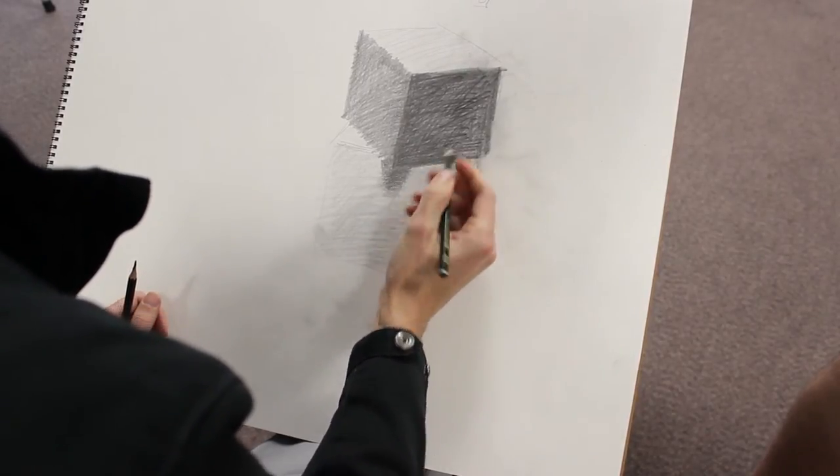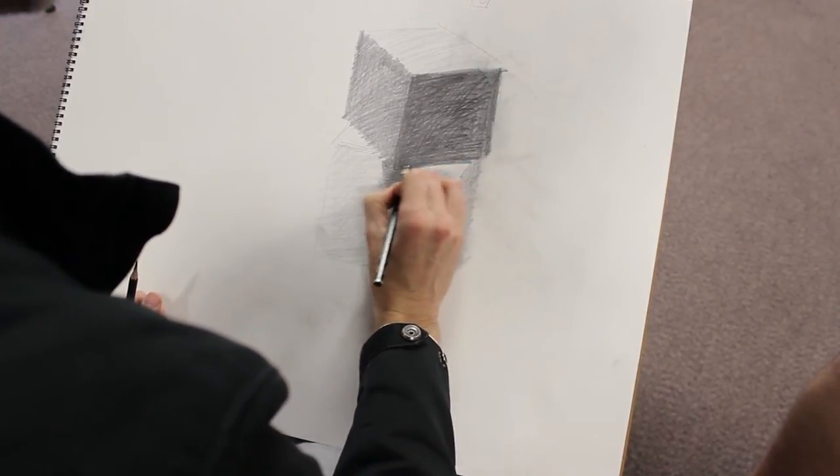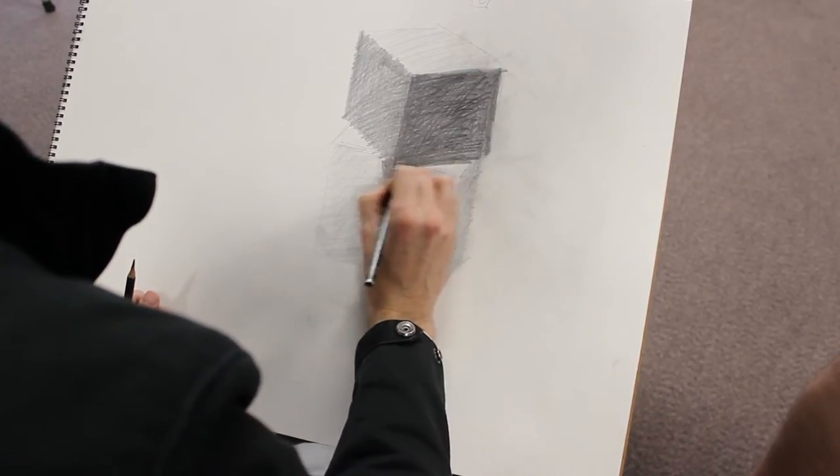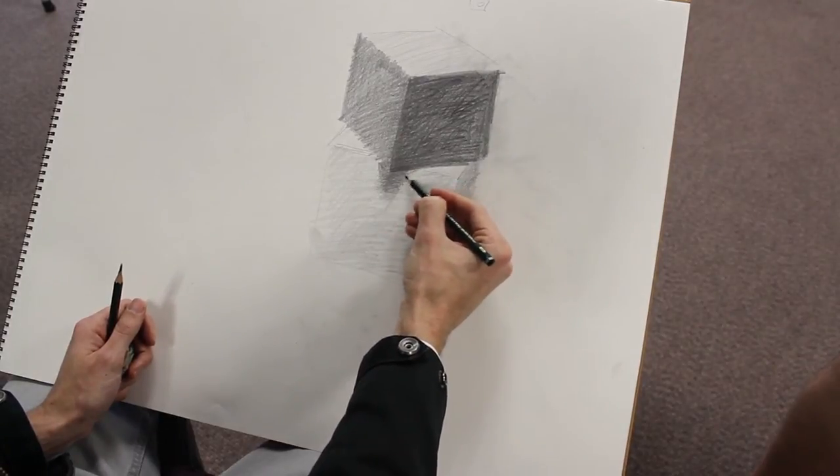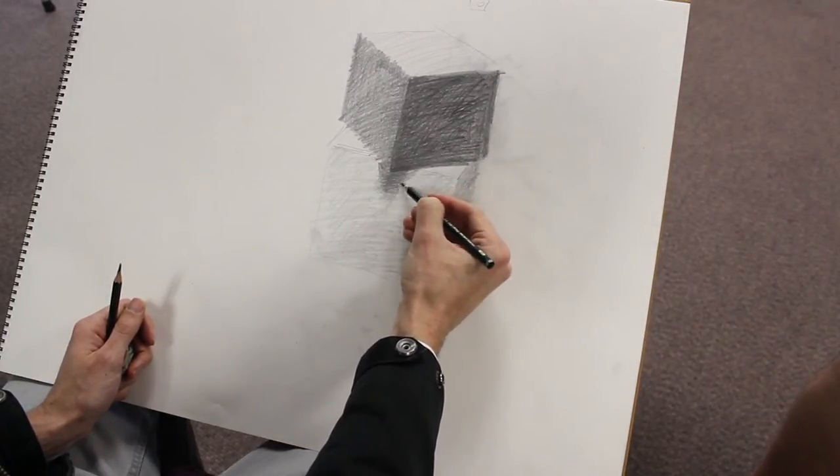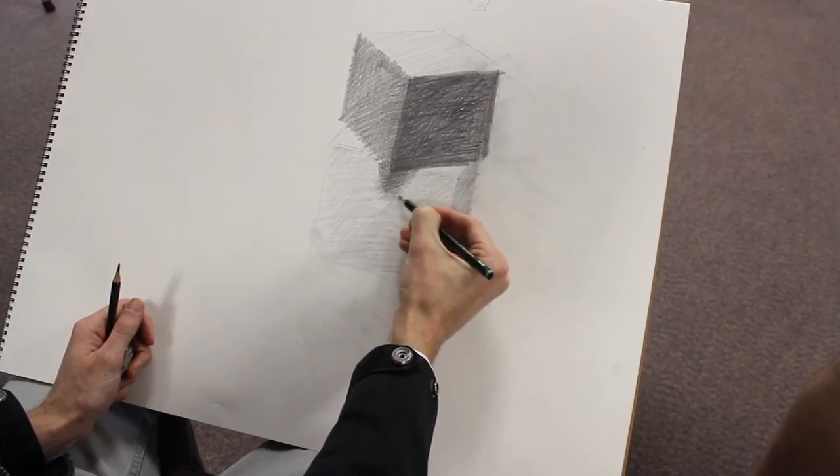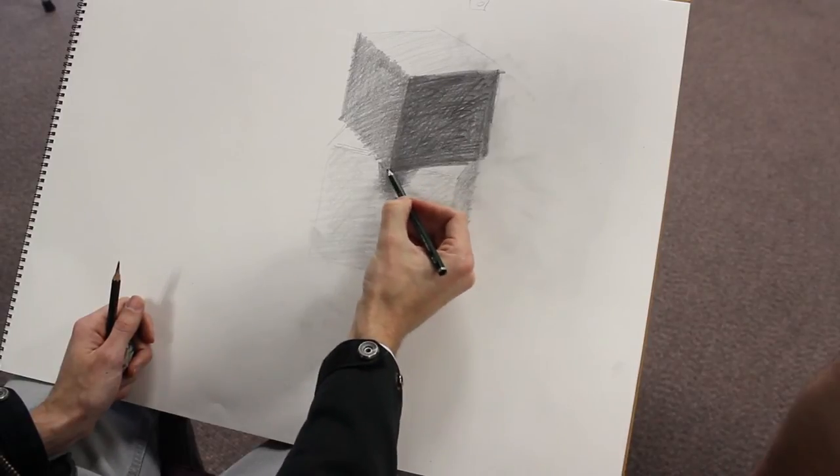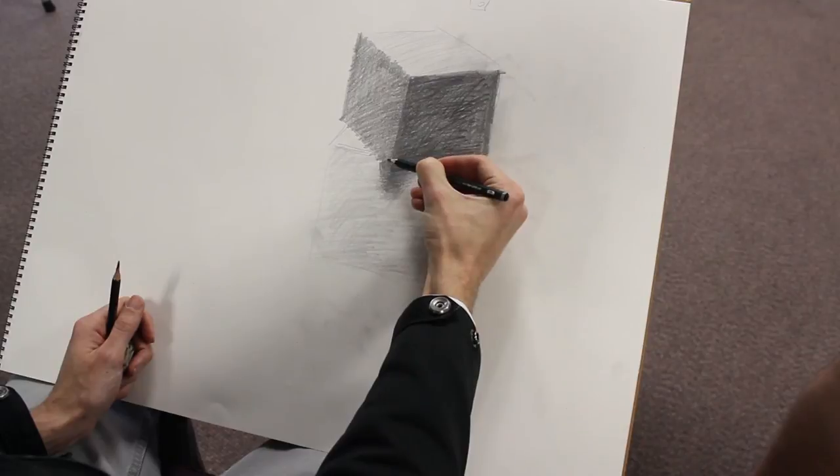So now I need this edge to come out. So now this starts to read as a cast shadow. That little bit of overhang.